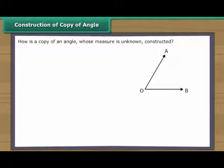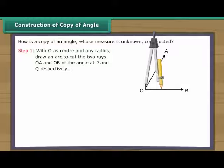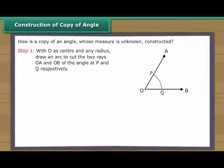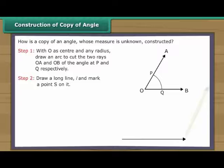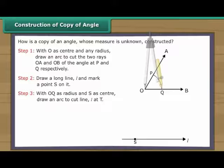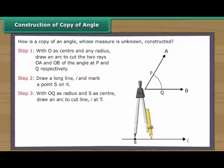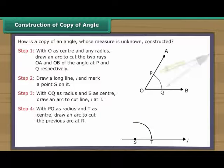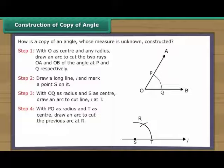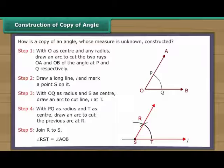Construction of copy of angle. How do we construct a copy of an angle whose measure is unknown? Angle AOB is given. With O as centre and any radius, draw an arc to cut rays OA and OB at P and Q respectively. Draw a long line L and mark a point S on it. With OQ as radius and S as centre, draw an arc to cut line L at T. With PQ as radius and T as centre, draw an arc to cut the previous arc at R. Join R to S. Angle RST is equal to angle AOB.